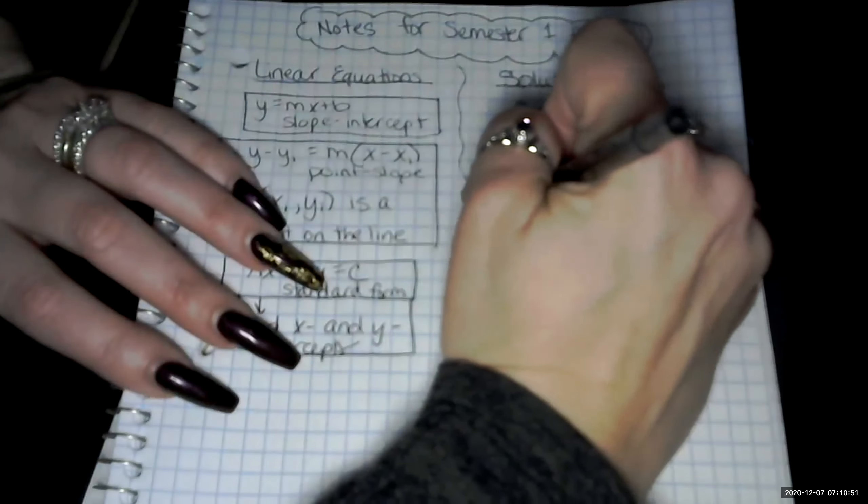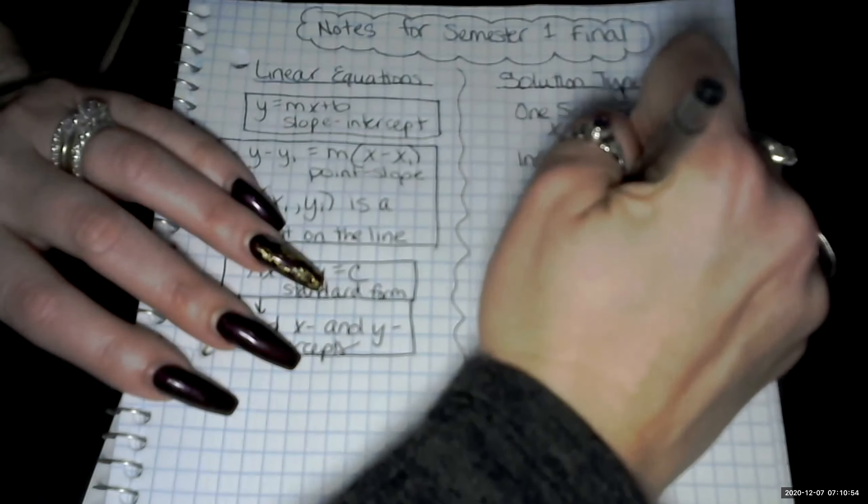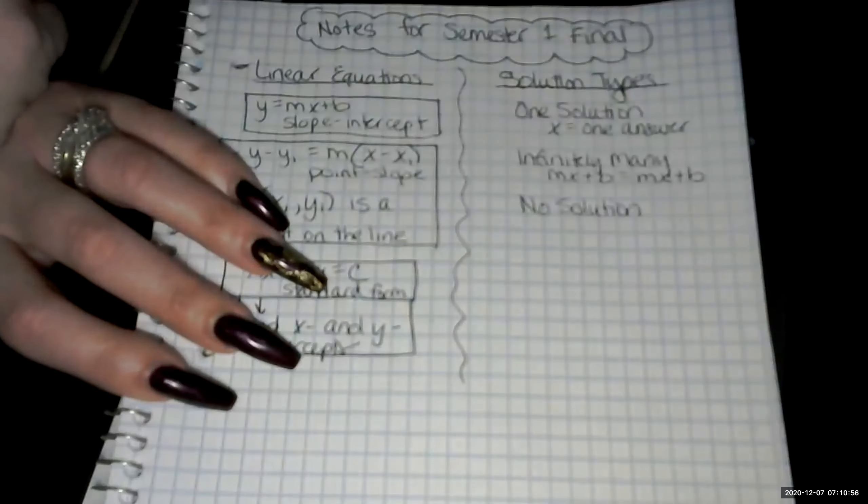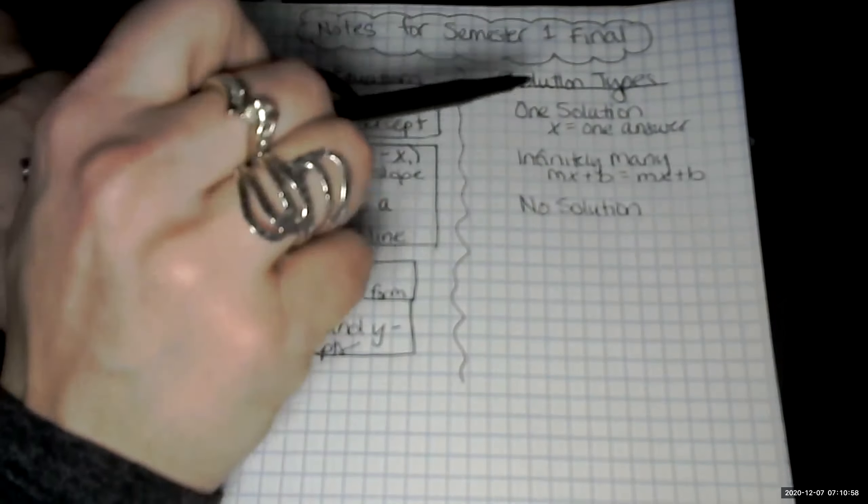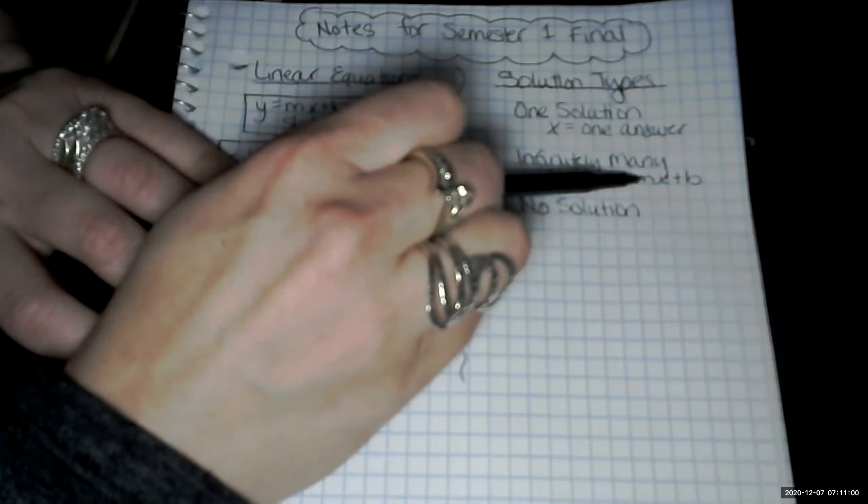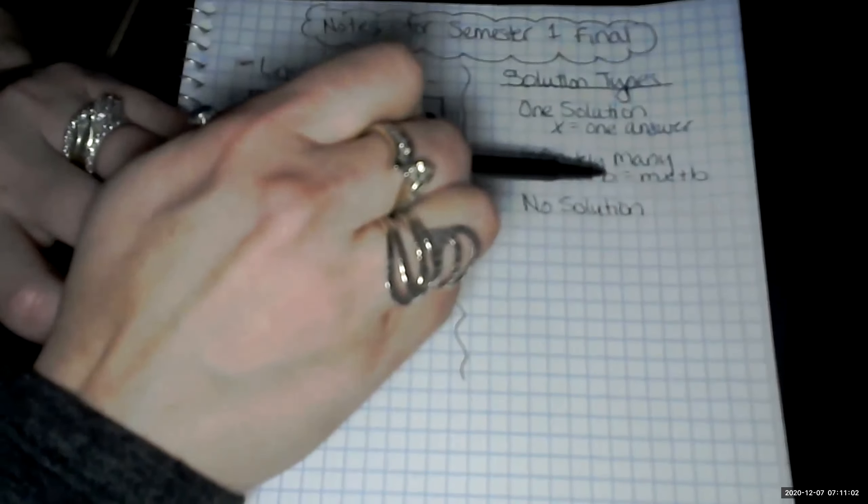The last type was no solution. And that's when these m's are the same, your coefficients, your slopes, but your b is different.